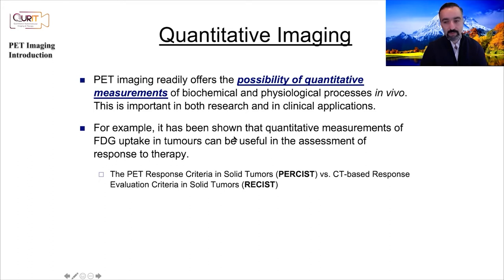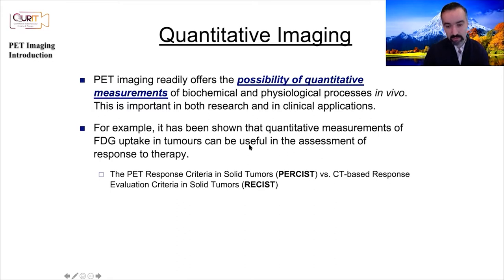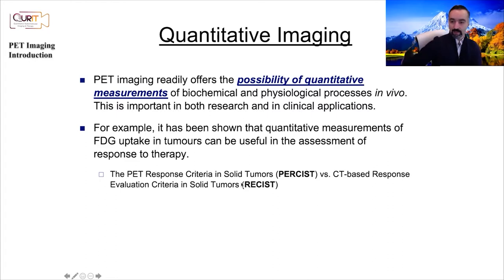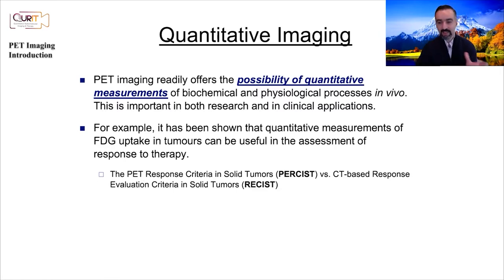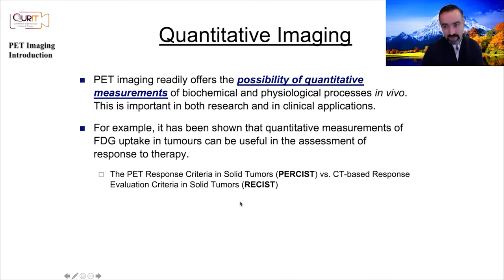Quantitative imaging is another important area — PET imaging allows you to do quantitative measurements of biochemical and physiological processes in vivo, which is very important in both research and clinical applications. For example, it has been shown that quantitative measurements of FDG uptake in tumors can be useful in the assessment of response to therapy. If a patient is undergoing chemotherapy, doing PET imaging before and after therapy and looking at the numbers can allow you to better assess whether the treatment is working and plan for future therapies.